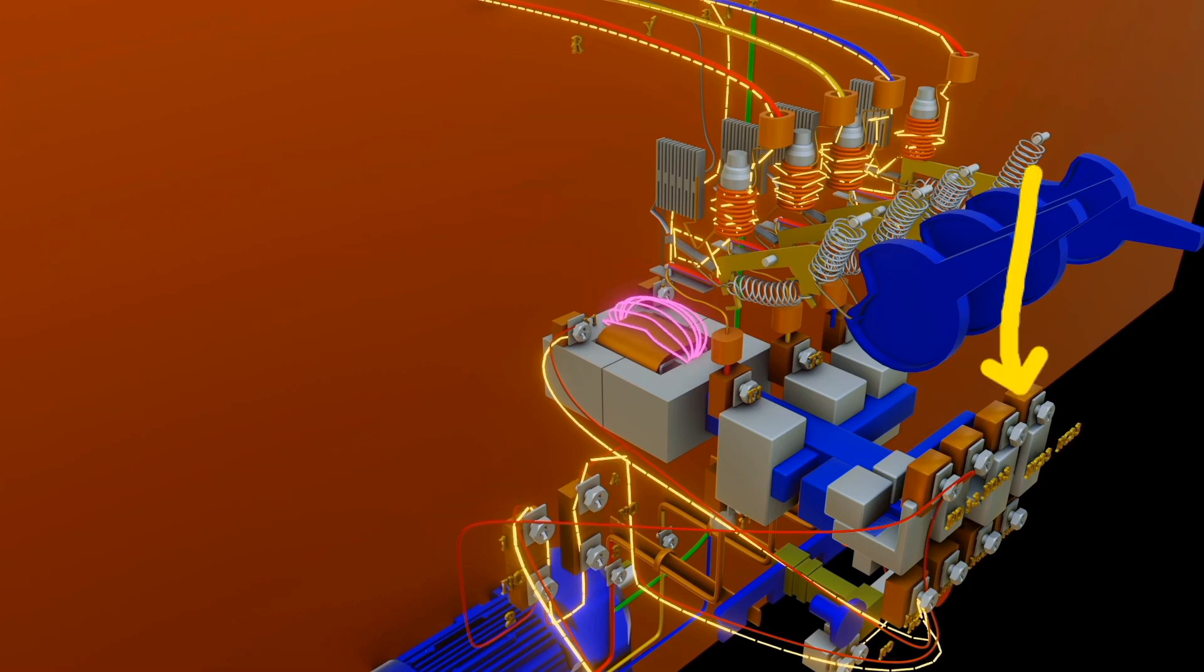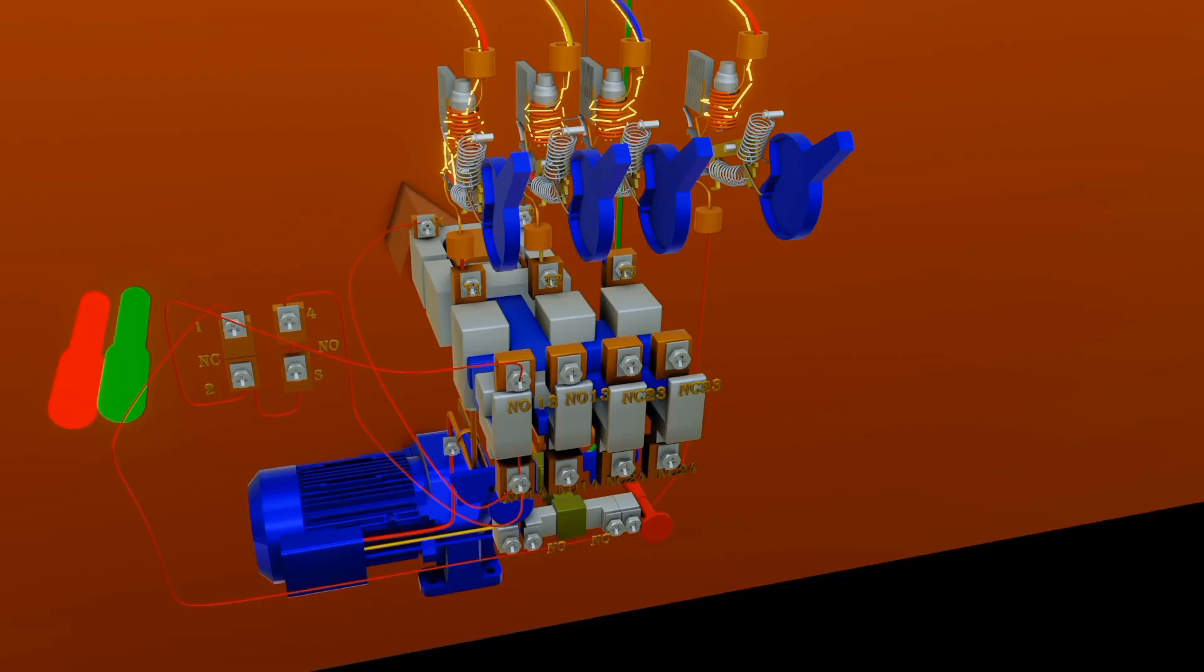As you can see, normally closed becomes open while normally open becomes closed. Hence, the current has two pathways. But remember that push button allows current to pass once when pressed, then becomes open contact.